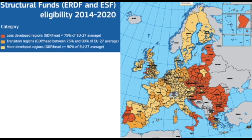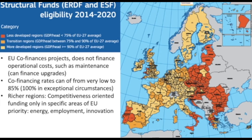Let's see the eligibility of regions for the structural funds. In terms of intensity of support, there are three categories: less developed or convergence regions with a GDP per head under 75% of the EU-27 average, receiving the highest intensity of support; transition regions with GDP per head between 75–95% of the average, where some regions may be improving or declining; and then the most developed regions with GDP per head above 90% of the EU average, which also receive support for very specific issues.